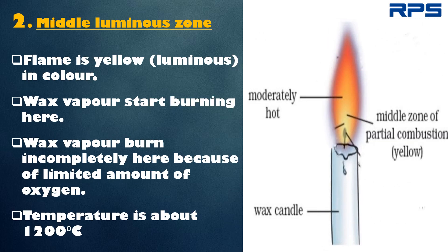The middle luminous zone is the middle zone where the flame is yellow in color. Here, partial combustion of wax vapor occurs because of a limited amount of oxygen. It is moderately hot, with a temperature of about 1200 degree Celsius.